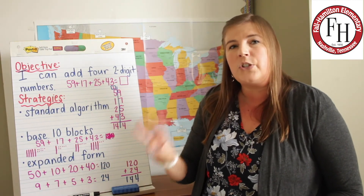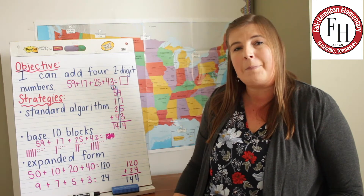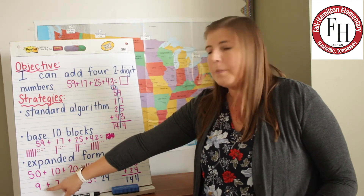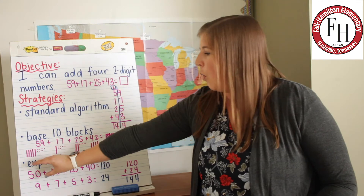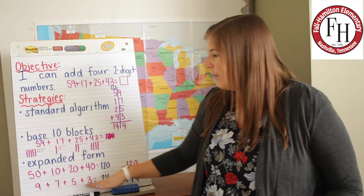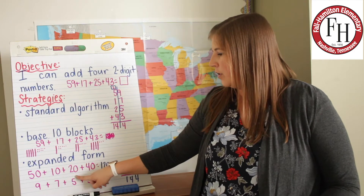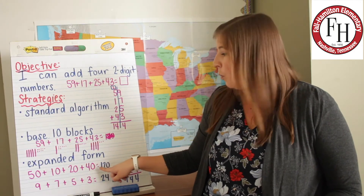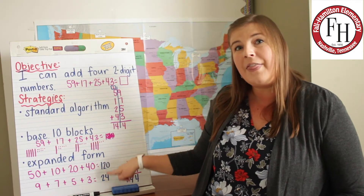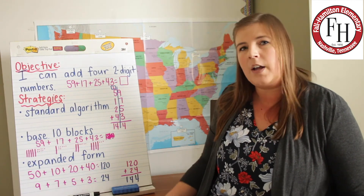The third strategy is using expanded form. For each of these two-digit numbers, I'm going to write them in expanded form. The number 59 in expanded form is 50 plus 9, but I'm going to organize the numbers to put all of the tens together and all of the ones together. When I add the tens — 50 plus 10 plus 20 plus 40 — the total is 120. When I add up all my ones, the total is 24. Then I add 120 plus 24 equals 144.